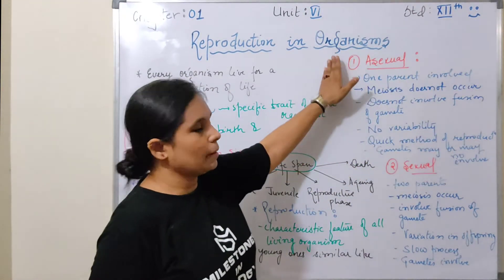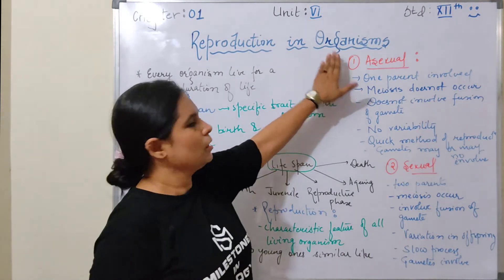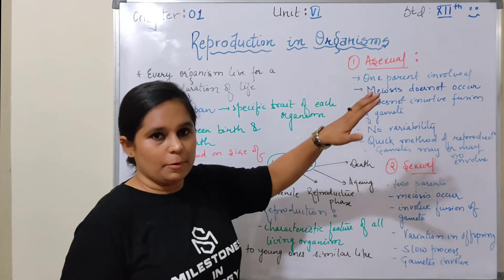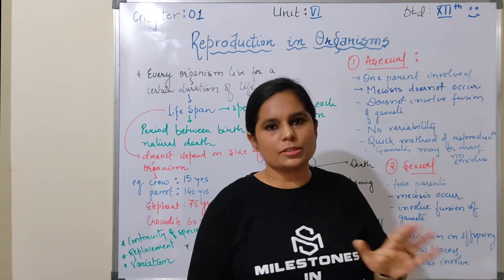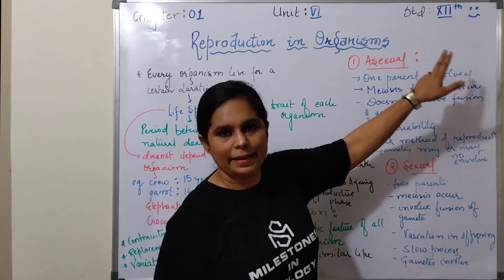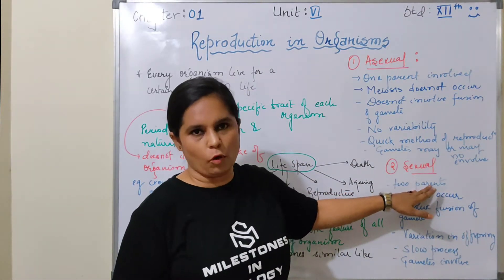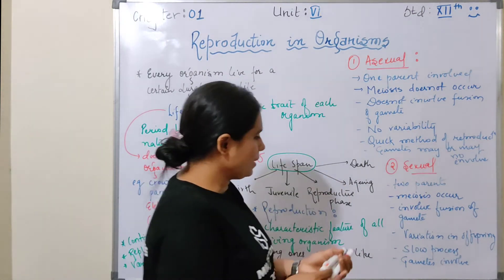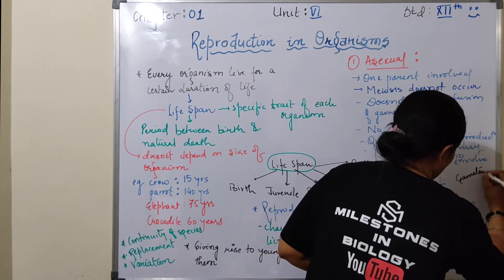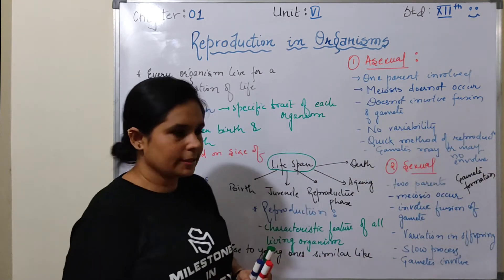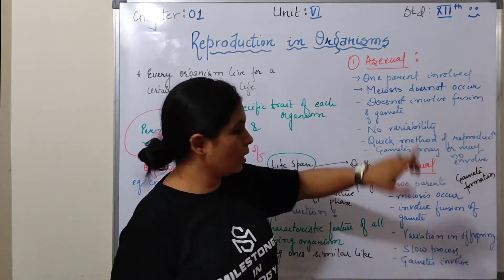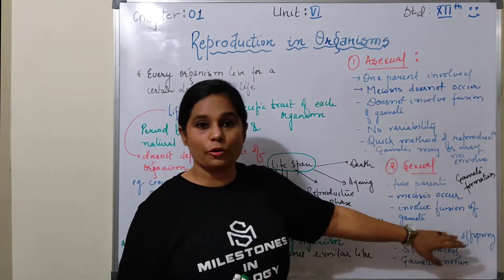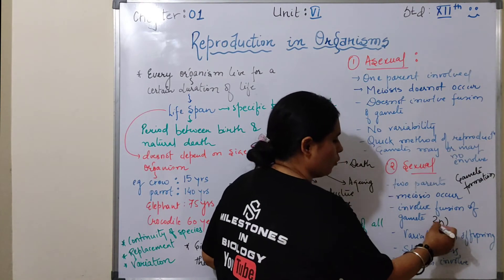In this chapter we are going to study the types of reproduction and their subtypes. The two major types are asexual reproduction and sexual reproduction. In asexual reproduction, one parent is involved; in sexual reproduction, two parents are involved — two sexes are involved. Meiosis is not involved in asexual reproduction, whereas in sexual reproduction there is meiosis through gamete formation. There is no fusion of gametes in asexual reproduction, and a diploid embryo will form directly.